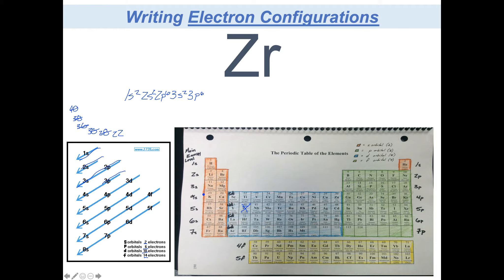That puts me through 3p to 4s. S's can hold 2, leaving 20 to go — I've just completed 4s. After 4s, this is where it gets tricky. If you've properly labeled your periodic table, you know that from 4s we go to 3d. This is a weird idea because we're in the fourth energy level and yet we drop back down to the third energy level. After 3d, we come back up to 4p. The reason is that 3d energetically fits between 4s and 4p.